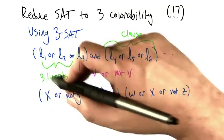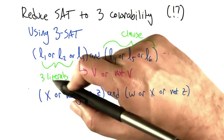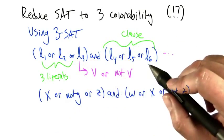AND of clauses, each clause has 3 literals. Each literal is either the name of a variable or NOT the name of a variable.